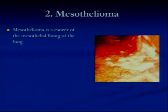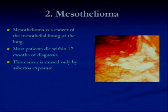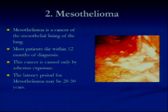The second disease is mesothelioma, and that is simply a cancer of the lining of the lung. Most patients die within 12 months of diagnosis. The cancer is caused only by asbestos exposure. It's the only documented way that you can contract this particular disease. The latency period for mesothelioma is 20 to 50 years. So most people probably outlive that particular disease if it were to come along, unless you get started early.